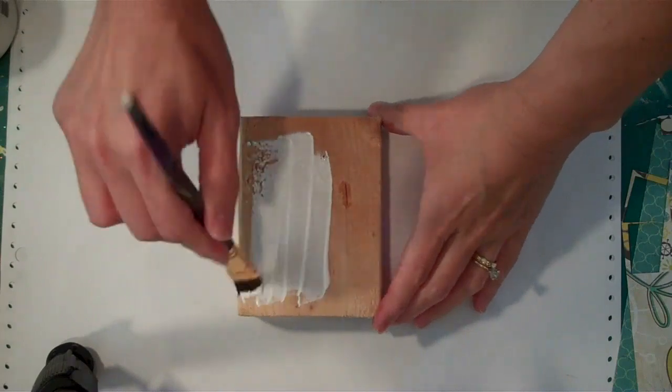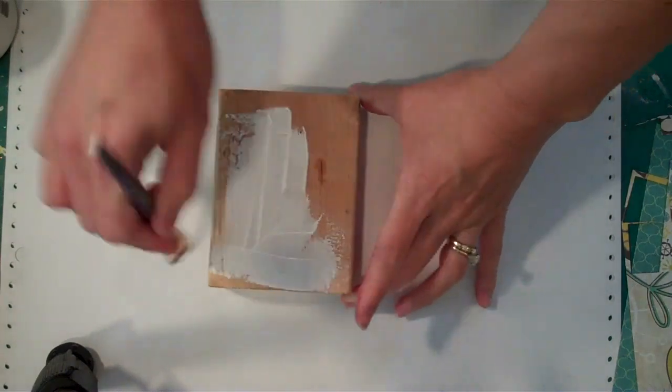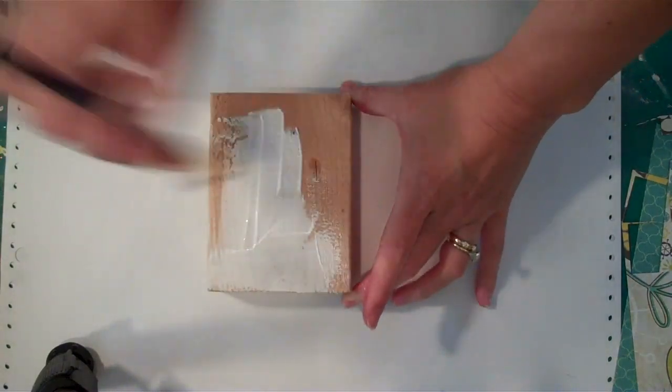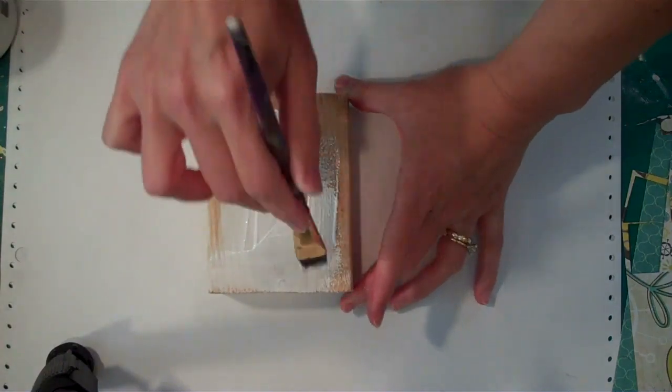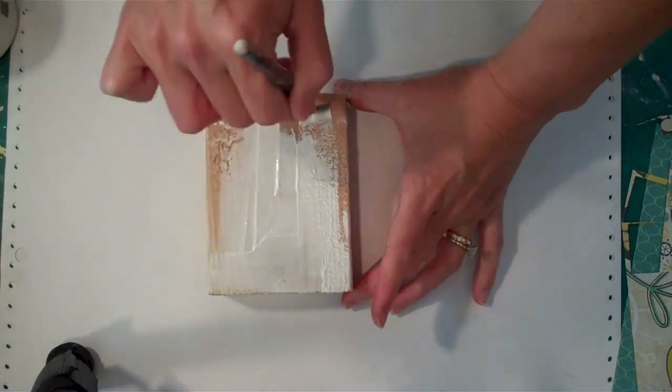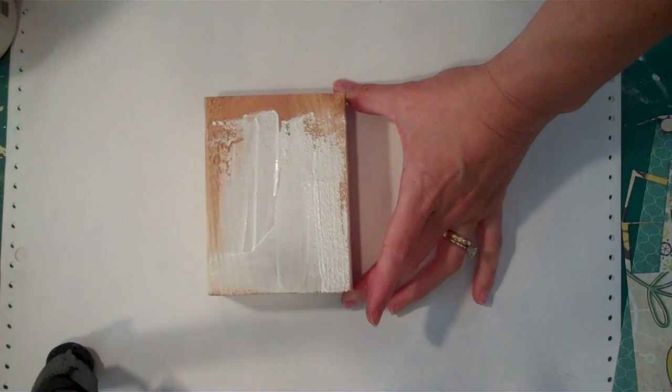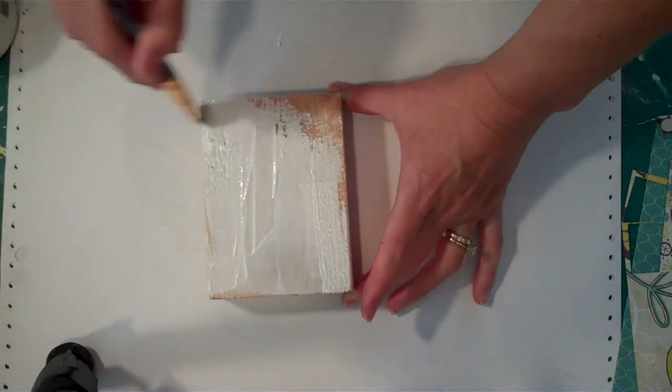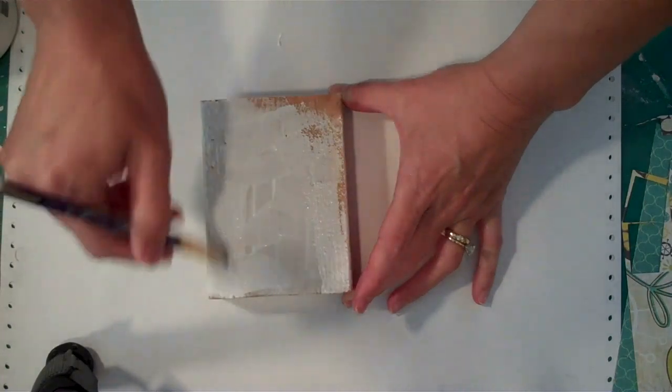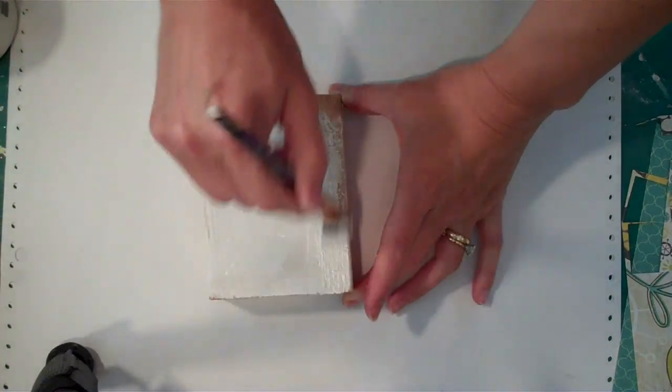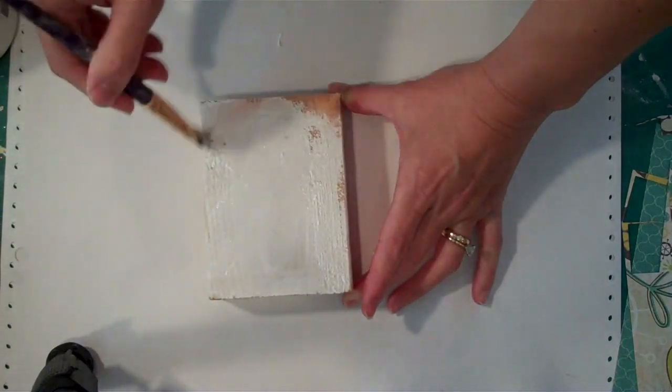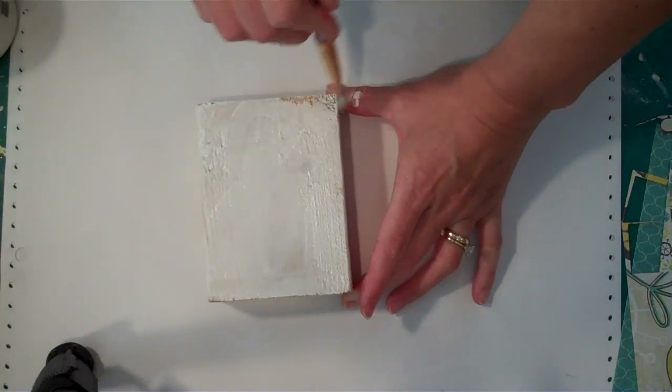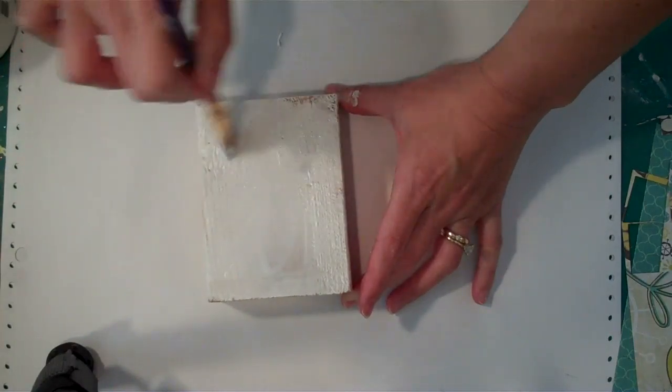This is an acrylic gesso that is just kind of chalky white paint. You could use acrylic paint if you wanted. The reason why I'm doing this is so whenever I start to glue the papers down, the glue just won't immediately be completely absorbed into the wood. I really like to use a wood base for this type of collage. It's just so sturdy and doesn't warp from any of the texture or the extra glue or wetness.